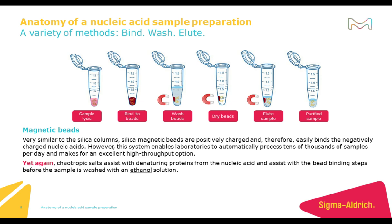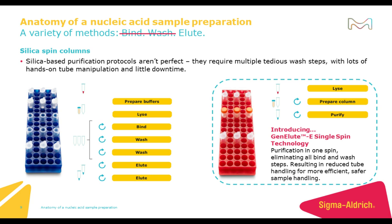Another common method is using magnetic beads. These are very similar to silica columns — silica magnetic beads are positively charged and therefore easily bind those negatively charged nucleic acids. Again, chaotropic salts are used to assist in denaturing the proteins from the nucleic acid and assist in the bead binding steps, before the sample is washed with an ethanol solution and finally eluted in a storage buffer. This process is widely adopted due to its ease of automation over silica spin columns, making it popular with high-throughput labs.